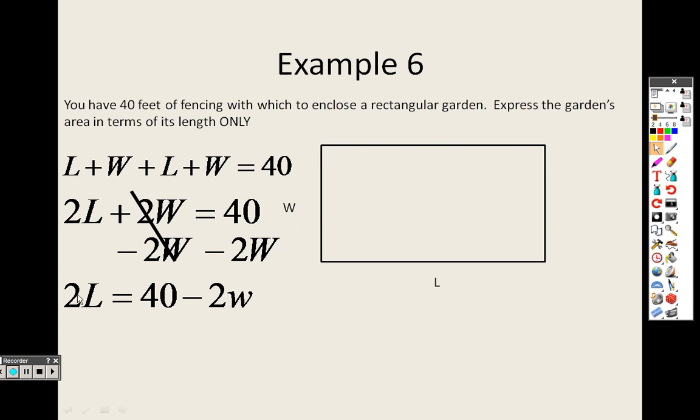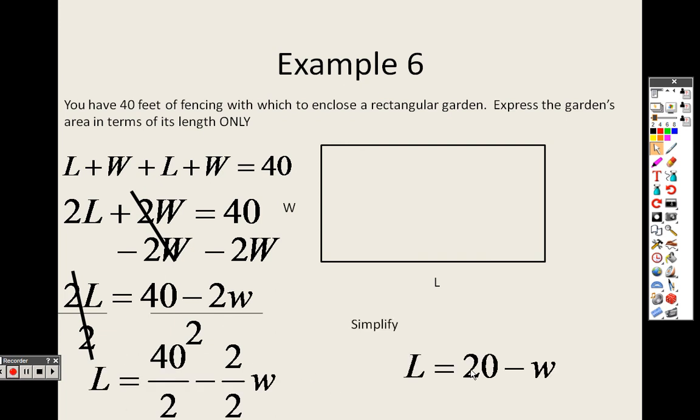And then, to get l by itself, it's 2 times l. I'm going to divide both sides by 2. And when I do that, I get 40 over 2, which is 20, because I can take those and divide them. And 2 over 2, which is 1. So I actually end up with 40 divided by 2, which is 20. 2 over 2, which is 1. So you actually end up with 20 minus w.